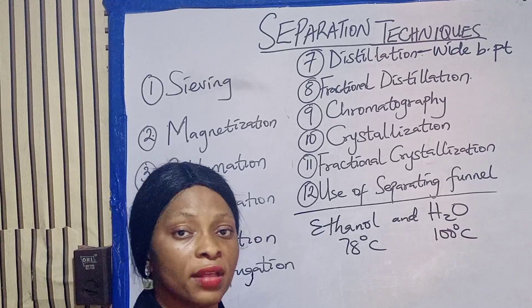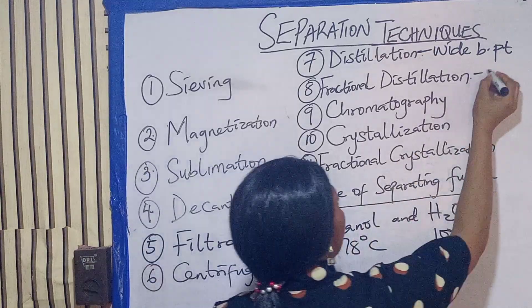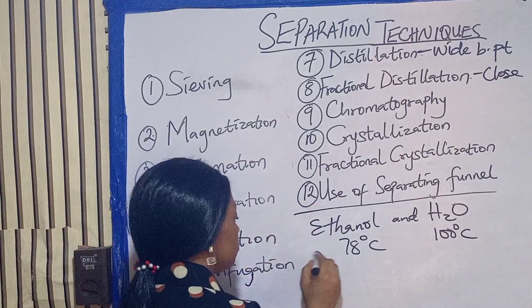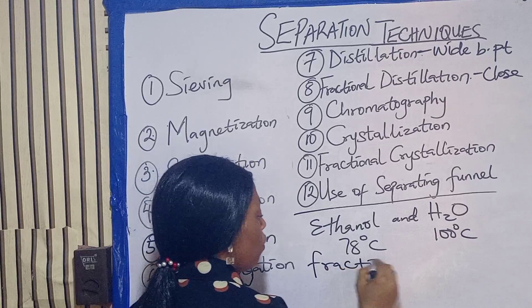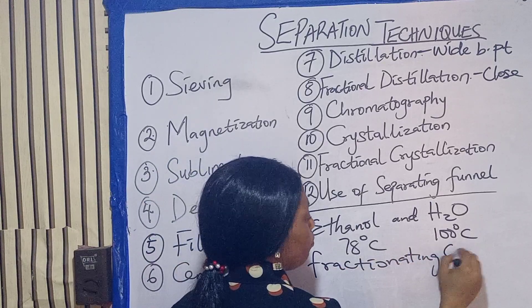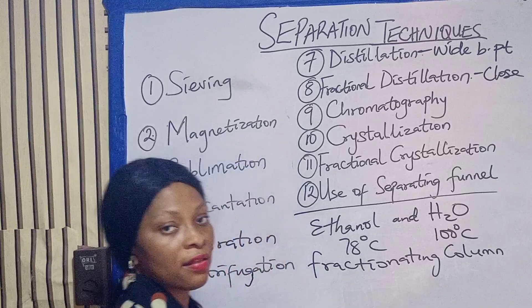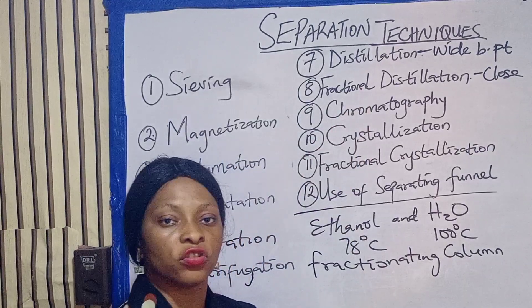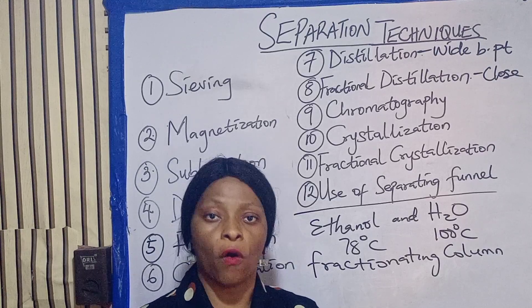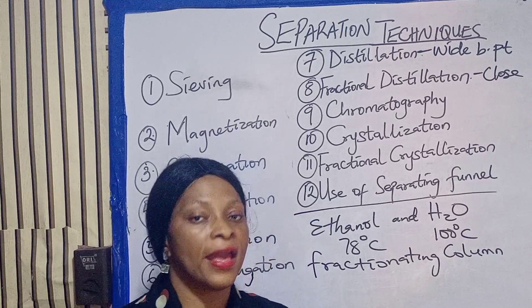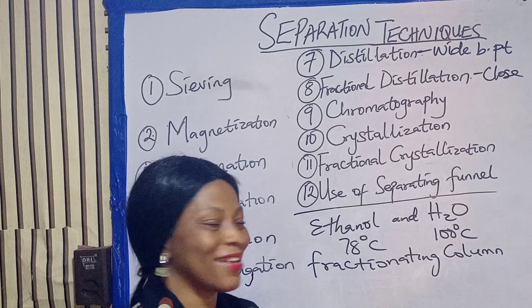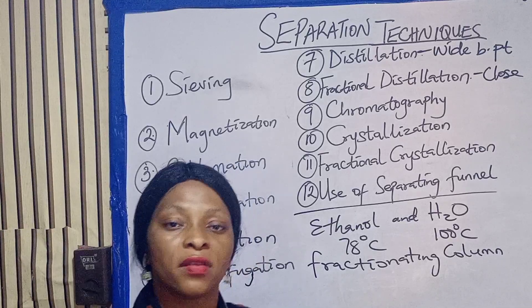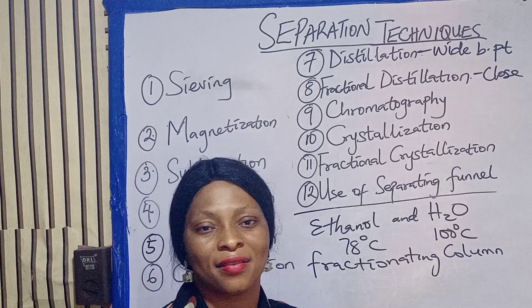Fractional distillation is used to separate two or more miscible liquids with close boiling points. It is carried out using a fractionating column, because this is where the actual separation takes place. Examples of substances you can separate using fractional distillation include petroleum or crude oil, and also the separation of air — a question examiners love to ask.